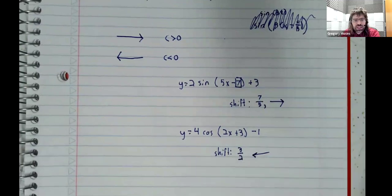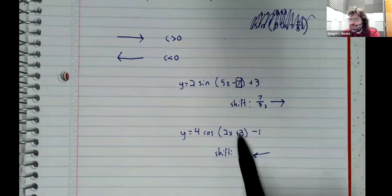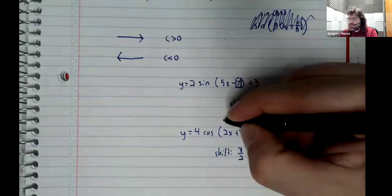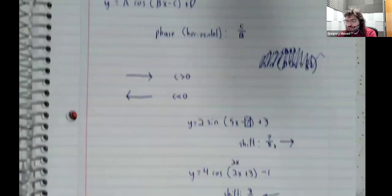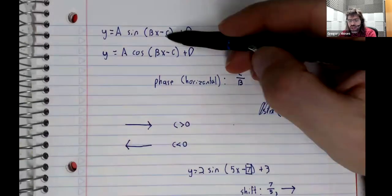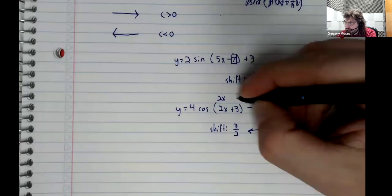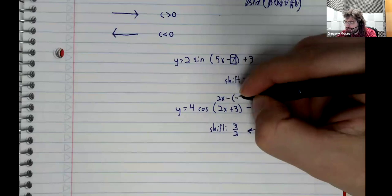Again, it would be easy to make a mistake—to say this is positive, so we're going right. But when we talk about sinusoidal functions, we've got this negative sign built in. Adding 3 is the same as subtracting negative 3.